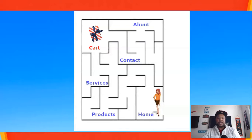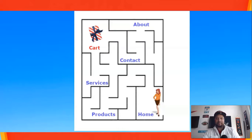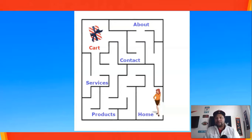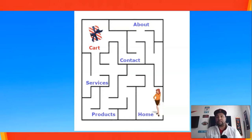Somebody visits your site and they're trying to figure out how do I become a customer? Where's the cart? Where do I buy? But they have all these different options — contact, about, products, services. So what happens is that a traditional website can be very confusing, and ultimately what it leads to is the majority of the traffic — the people who visit — they just leave without ever actually taking any type of course of action. That could be giving you their contact information to become a lead, requesting a call, or actually buying something, whether it be a service or a product right there online.